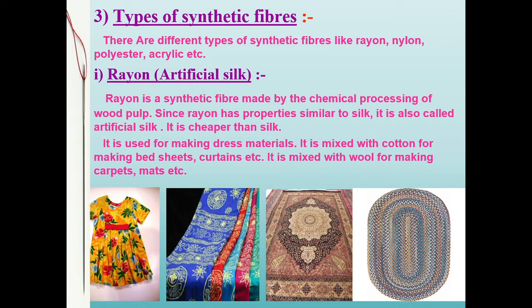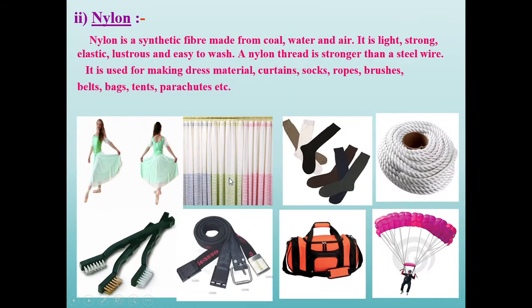Rayon is a synthetic fiber made by the chemical processing of wood pulp. It has properties similar to silk and is also called artificial silk. Rayon is cheaper than silk and is used to make a variety of products such as bed sheets and curtains.